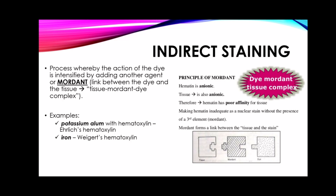Indirect staining is the process whereby the action of the dye is intensified by adding another agent or a mordant, which serves as a link or bridge between the tissue and the dye to make the staining reaction possible. By itself, the dye may stain only weakly, if not at all. The mordant combines with the dye to form a colored lake, which in turn combines with the tissue to form a tissue-mordant-dye complex that is rendered insoluble in ordinary aqueous and alcoholic solvents. This allows subsequent counter-staining and dehydration to be carried out easily, and it is an integral part of the staining reaction itself, without which no staining could possibly occur.